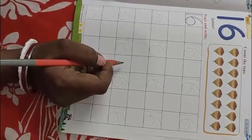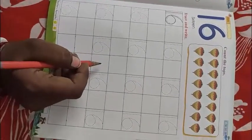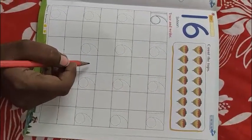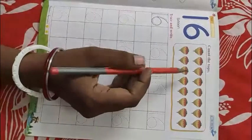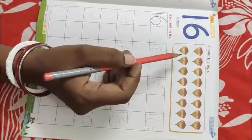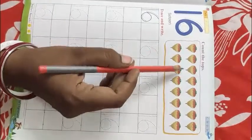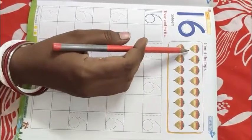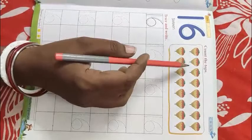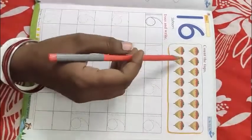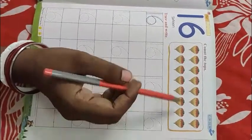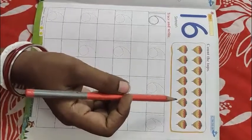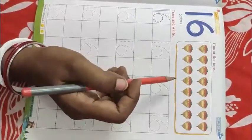After 15 which number comes? 16. So what we can see here? What is the name of this object? Yes, top. So here we can see so many tops are here. Many tops are here. We will count up. How many tops are here? Let's count with me.